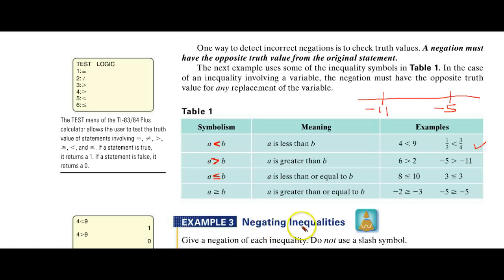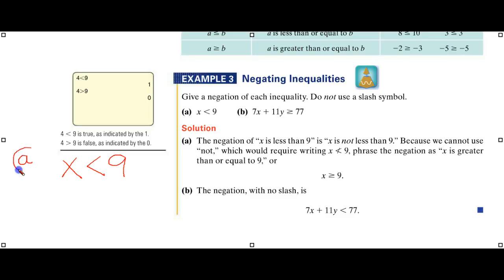What we want to do is negate inequalities. In letter A, the original statement is 'X is less than 9.' To negate this, its opposite, we would say 'X is greater than 9,' or 'X is greater than or equal to 9' would be a proper negation. In letter B, the same principle applies. We would take the inequality symbol and reverse it. Instead of saying 'greater or equal to,' we could just say 'is less than.' They're saying do not use the slash symbol. They don't want you to write with a slash through it saying 'is not equal.' That's not what we're looking for.